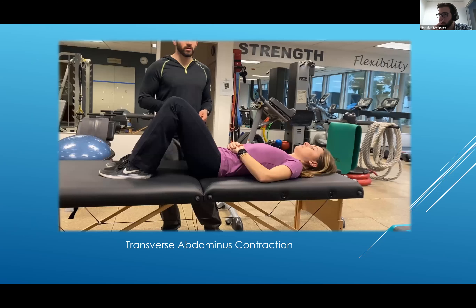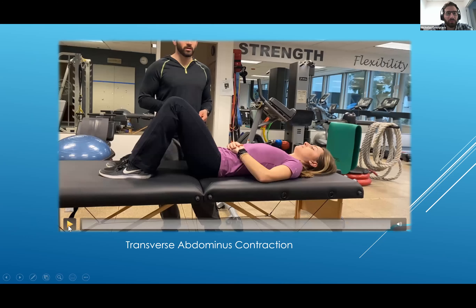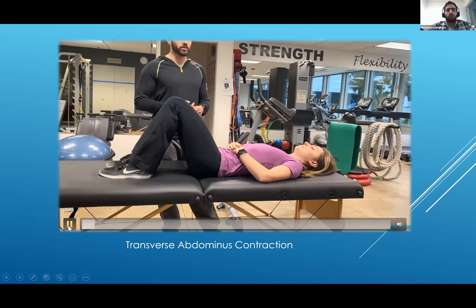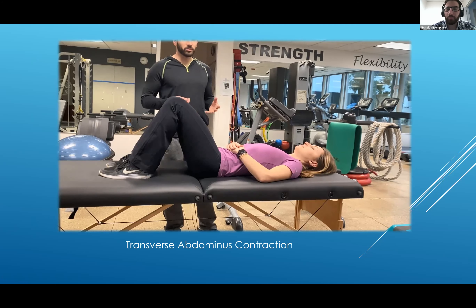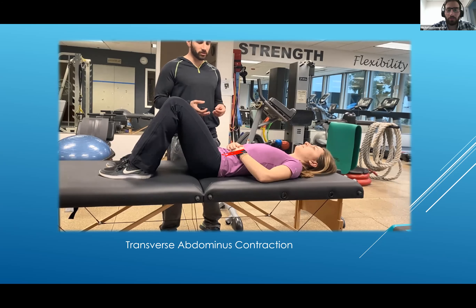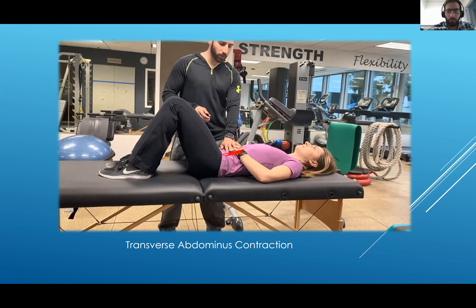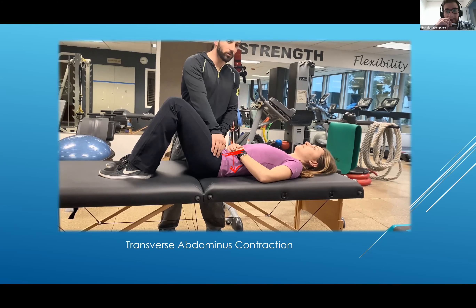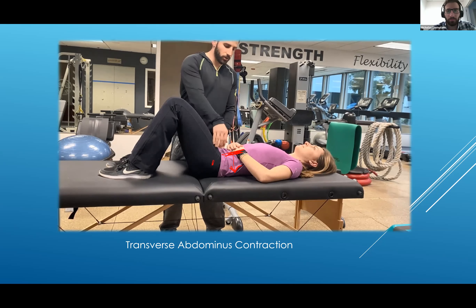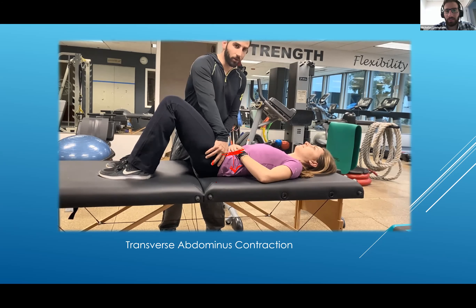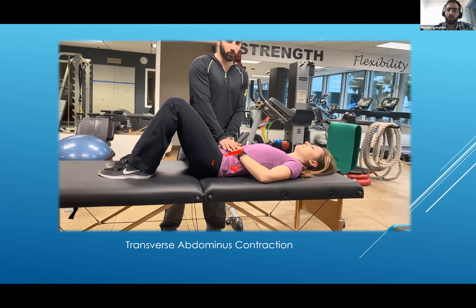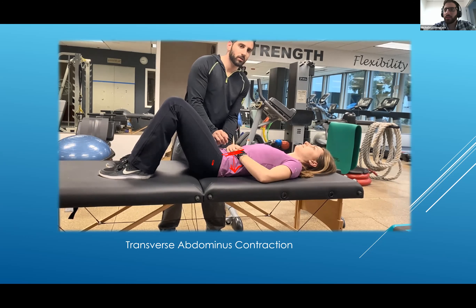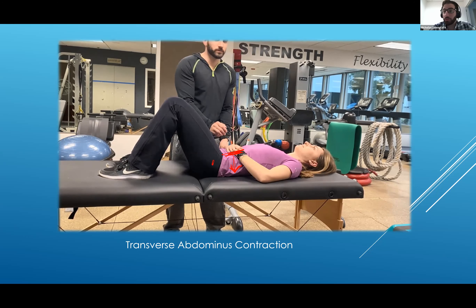The transverse abdominus contraction involves pulling your belly button towards your spine and flattening your back against the table or ground. You don't want to see your hips move at all — they should stay nice and stable. Hold it for 10 seconds, about 20 times, and make sure to breathe while you're doing it.